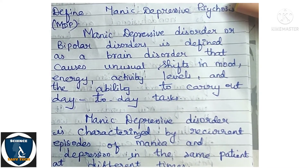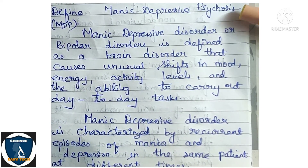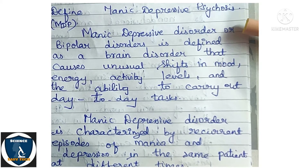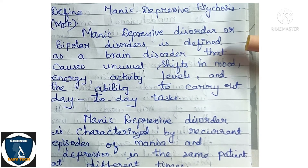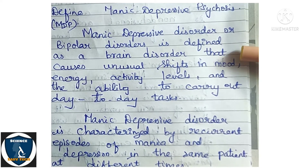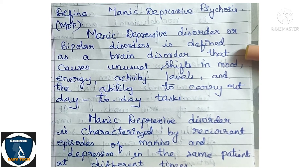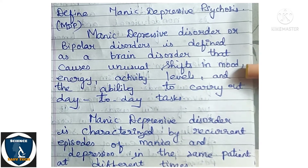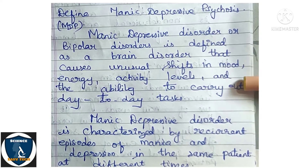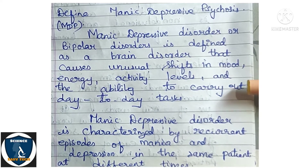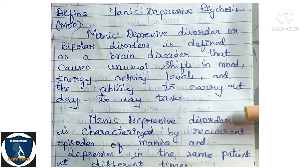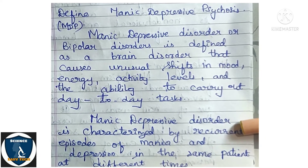Second question: Define manic depressive psychosis (MDP). Manic depressive psychosis, or bipolar disorder, is defined as a brain disorder that causes unusual shifts in mood, energy, activity levels, and the ability to carry out day-to-day tasks.